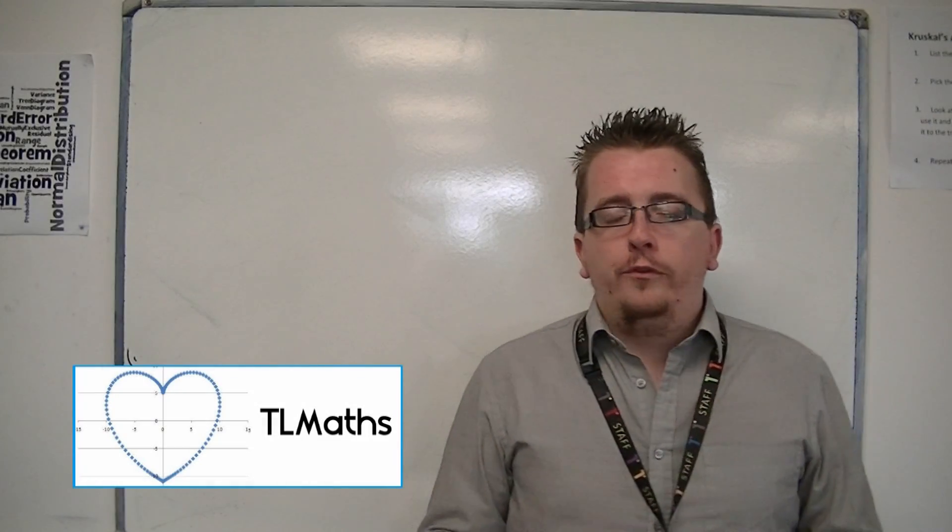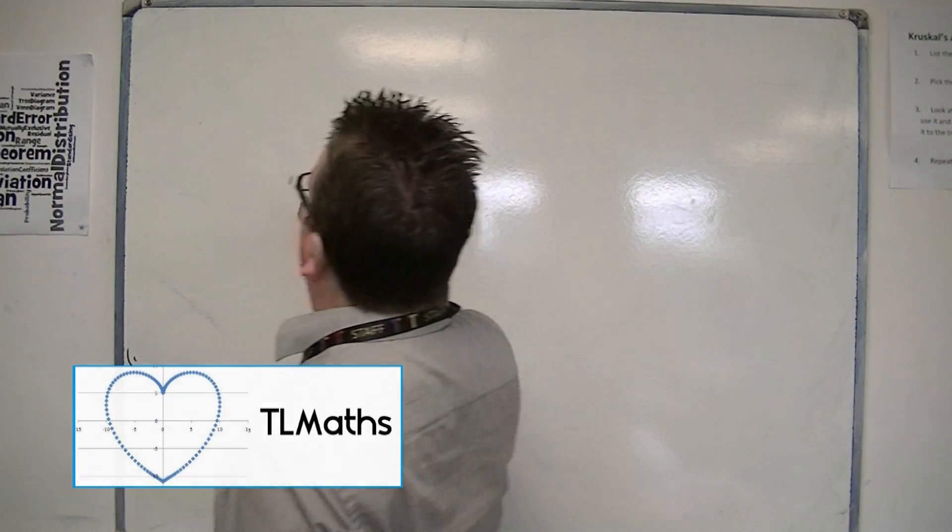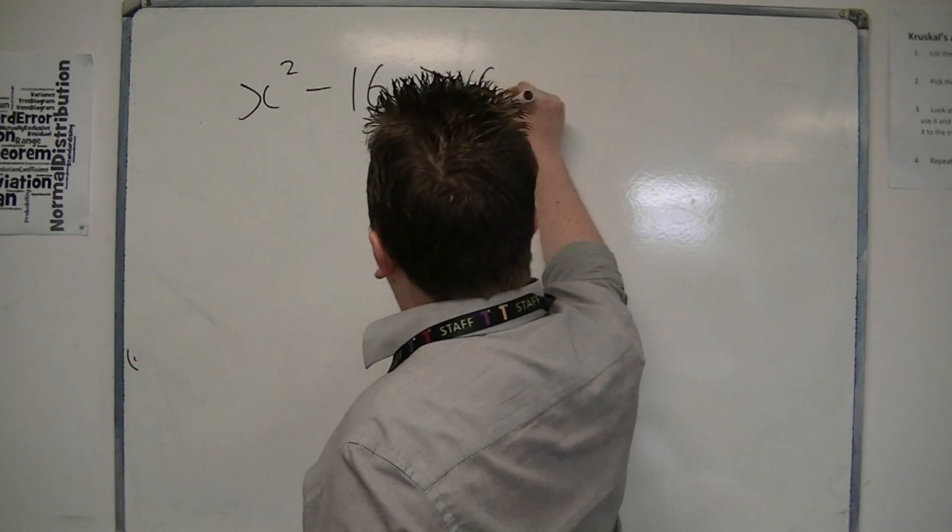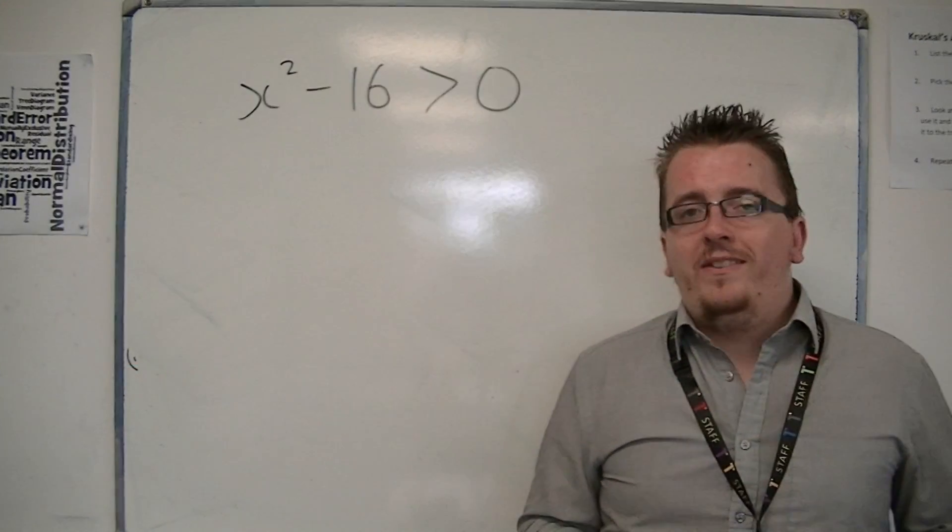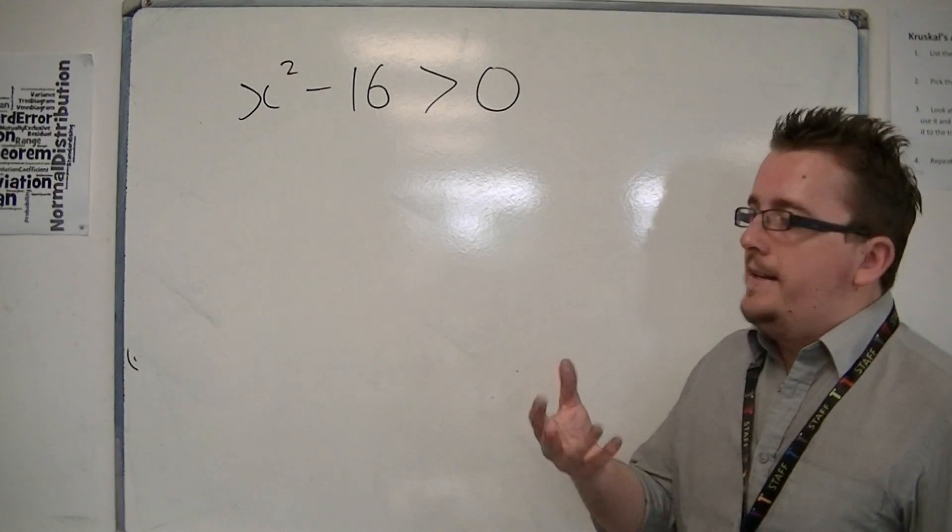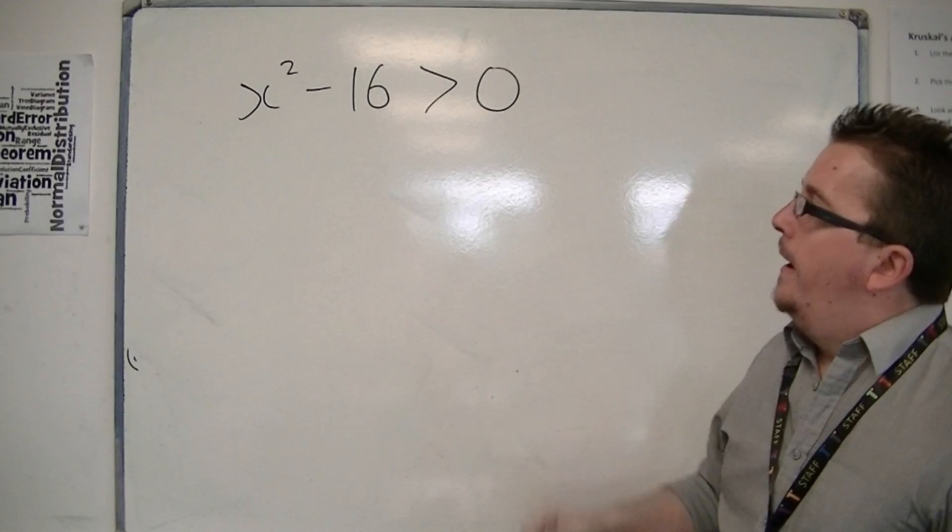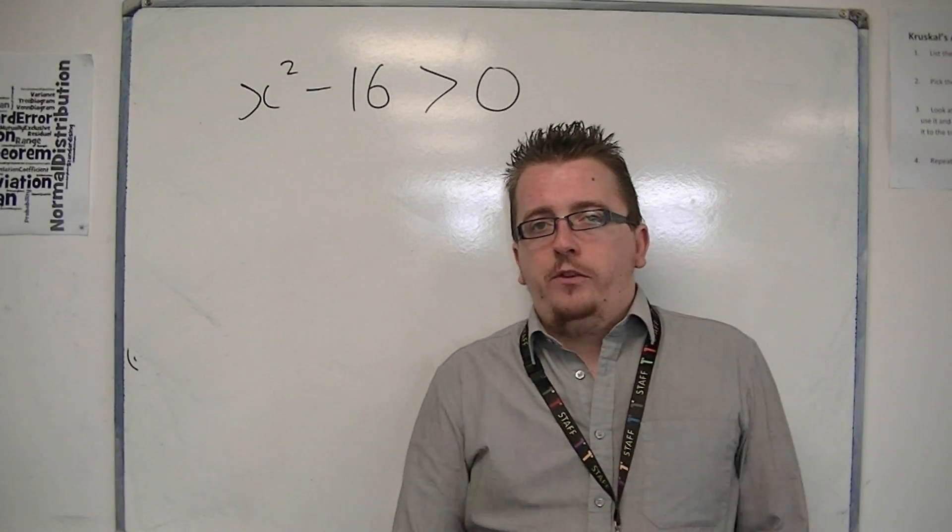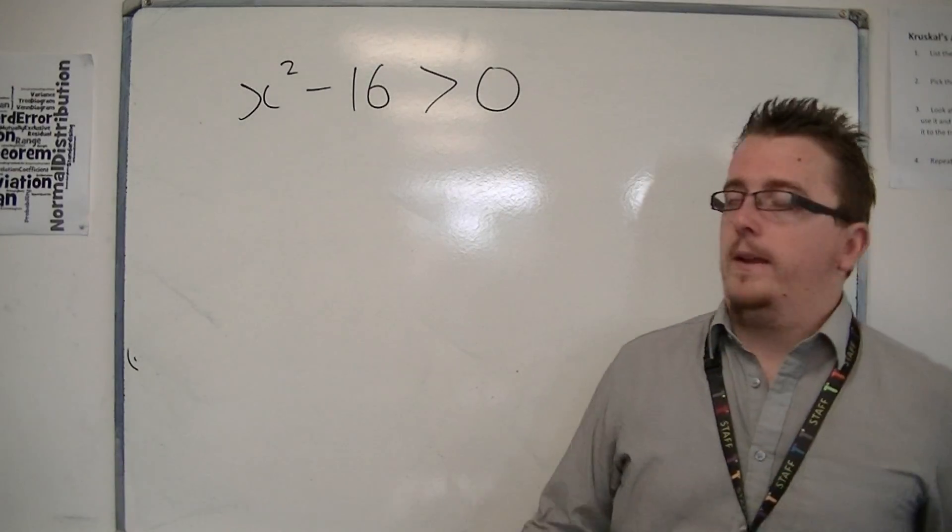If you've got to solve an inequality that looks like this, this is a quadratic inequality. The fact that it's got that x squared in it is telling you that it's quadratic. And you can't really solve a quadratic using the linear means that we have before.